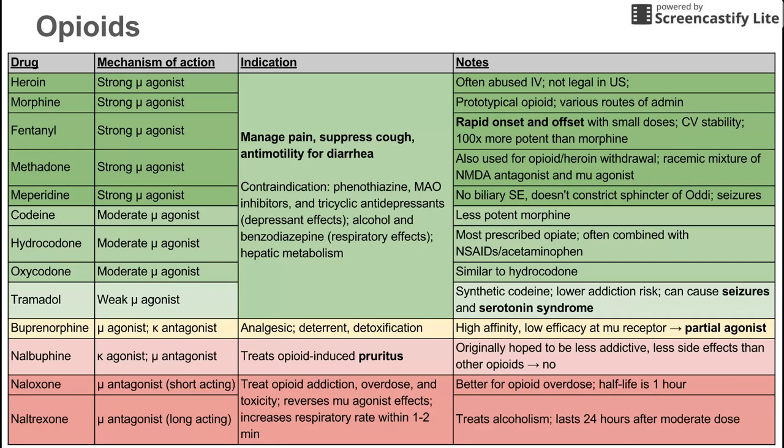Next is buprenorphine, which is a mu agonist like the others discussed, and also a kappa antagonist. Its indications include being an analgesic used to manage pain, and it's also used in detoxification and as a deterrent. Sometimes buprenorphine is added to other drug cocktails to prevent people from abusing them.